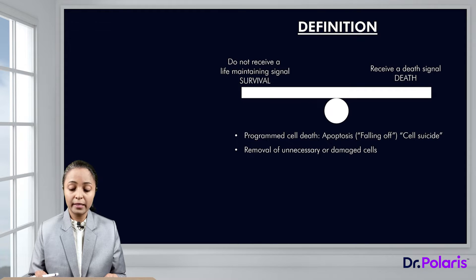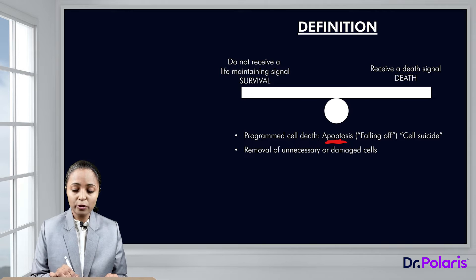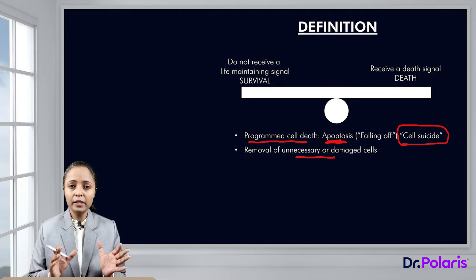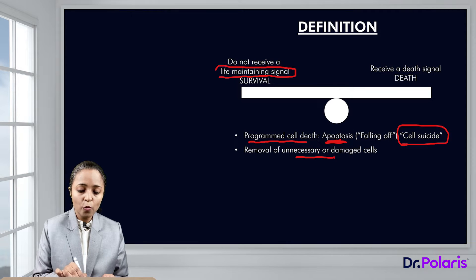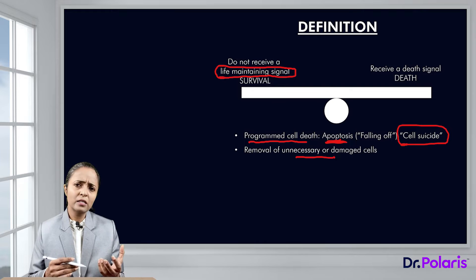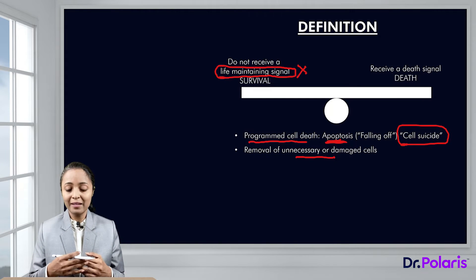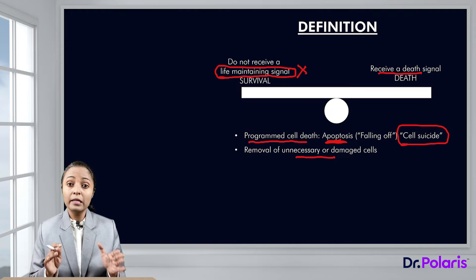Apoptosis occurs due to the activation of programmed machinery within the cell, which is why it is also known as programmed cell death or cell suicide. It is important for removal of unnecessary or damaged cells. There is a balance between cell survival and cell death. For cells to survive, they must continuously receive life-maintaining signals known as growth factors. Neighboring cells release growth factors to maintain a cell's life, but if those growth factors are absent, or if the cell receives a death signal, apoptosis will occur.